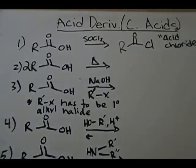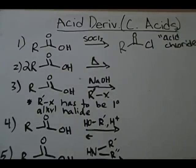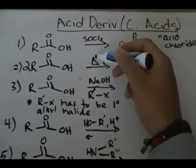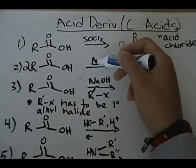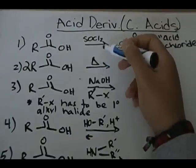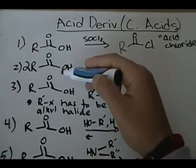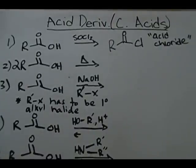Before I go to the next reaction: all of these reactions are basically interconverting between one acid and its derivative, constantly interconverting between acid derivatives. You'll see we go from acid chlorides to other things to carboxylic acids. The next reaction is two carboxylic acids under high heat — this triangle represents heat, also known as delta. Under high heat conditions, two carboxylic acids will form an anhydride.